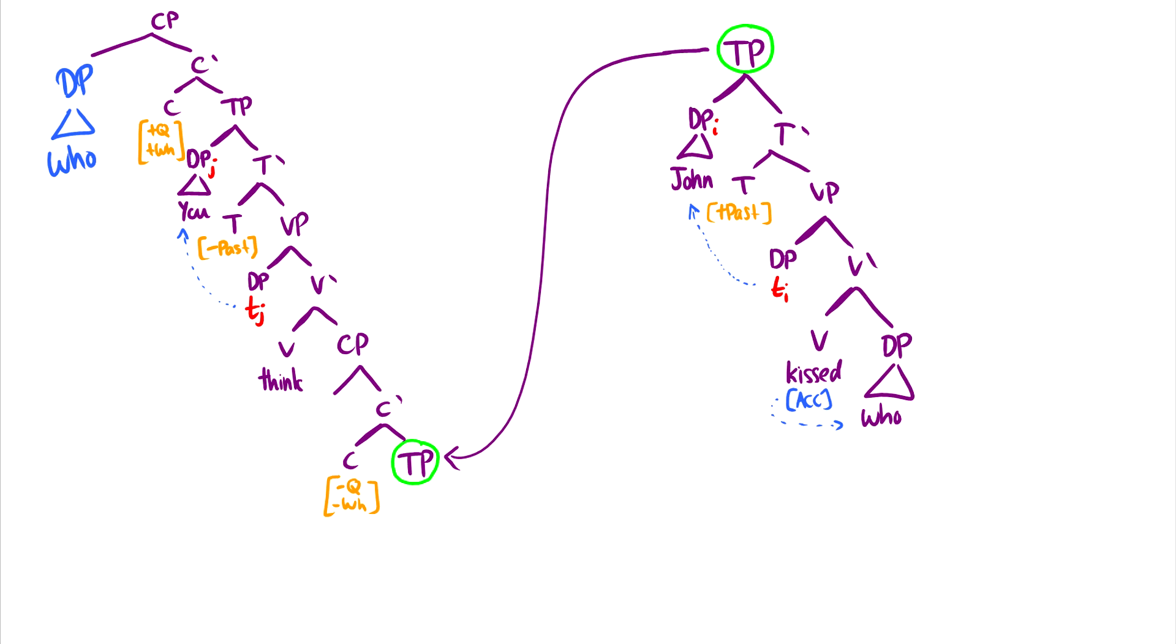The first thing it does is it moves up to spec CP of the embedded clause, which just to show you explicitly where it is, is under this CP. So this is the embedded clause here. So who is going to move up into spec CP in this position. So DP who, and then we'll leave a trace down in the object.